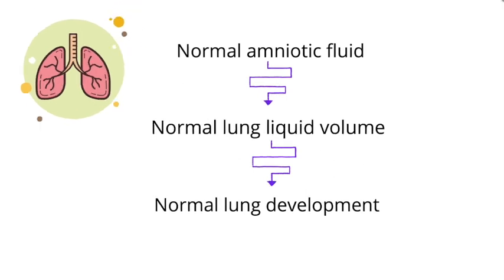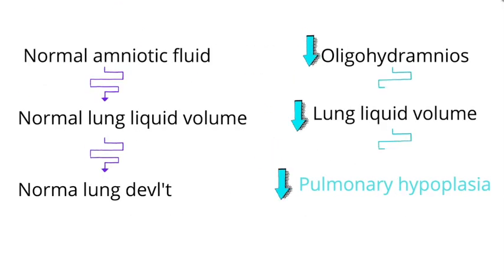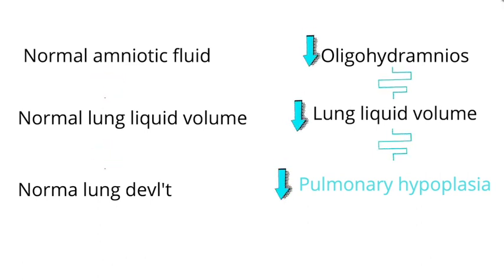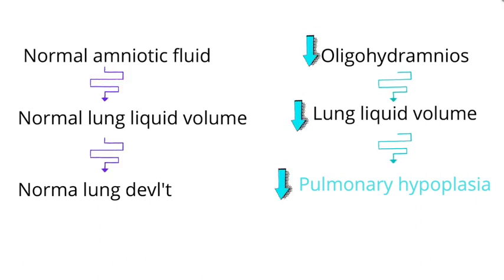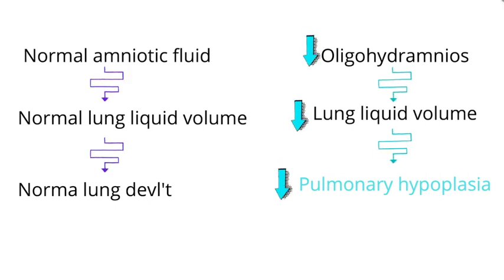However, in oligohydramnios the amniotic fluid is decreased, thus affecting the overall growth and development of the lungs and causing pulmonary hypoplasia. Knowing the association between oligohydramnios and pulmonary hypoplasia is very, very high yield — never forget it.